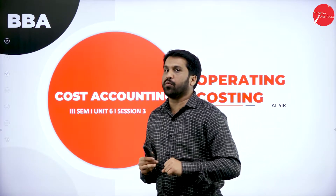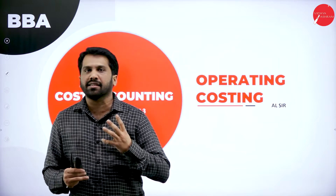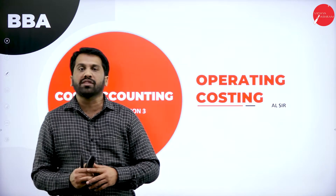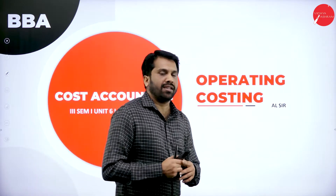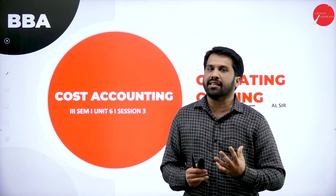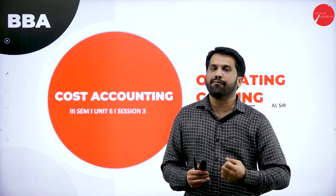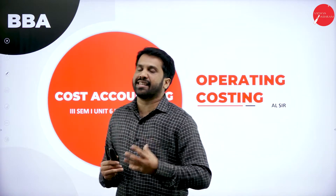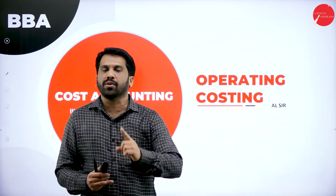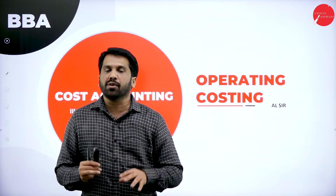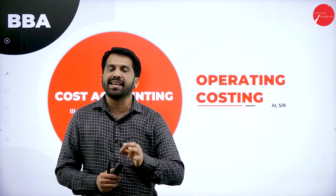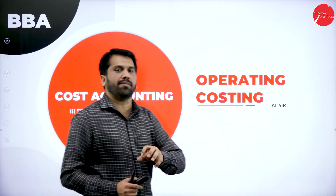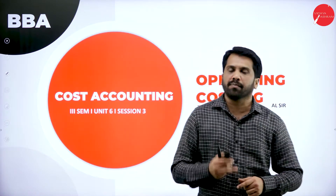You have to find out which are running expenses and which are fixed expenses. You have to learn which are fixed and which are variable. Like rent — we call it a fixed expense. Even though we have 1 student, we have to pay rent. Even though we have 100 students, we have to pay the same rent. So we have to bifurcate the variable and fixed, then we start our problem.